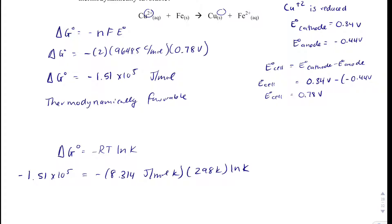And we'll solve for ln of K. So what I'm going to do is I'm going to isolate ln of K by dividing over 8.314 and 298, and I get ln of K equals 60.9.